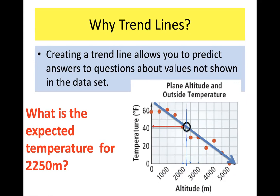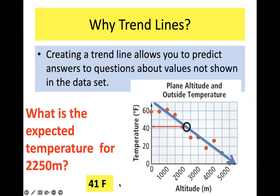This works for going from x to y or from y to x. For instance, at 45°F, you could go from 45 degrees to the trend line and then straight down to find the altitude — that looks like about 1,500 meters. That's the real purpose of trend lines: you use them to make predictions about the data set. The predicted temperature at 2,250 meters would be about 41 or 42 degrees.